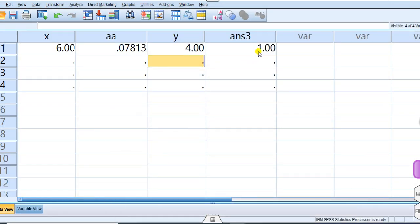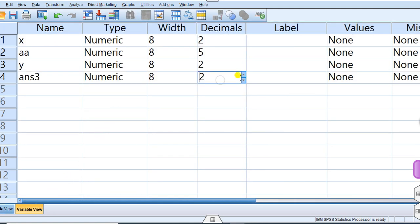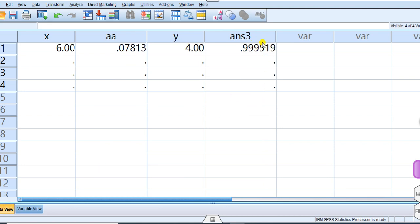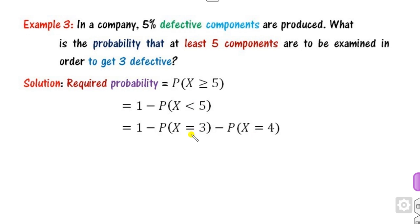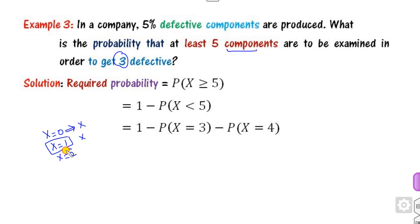The result executes with no error. It initially appears as exactly 1, but increase the decimal places to five or six and you will see the correct answer. You can also solve this using the PDF method by summing over valid x values, but note that x cannot be less than 3, since you need at least three components to get three defectives.